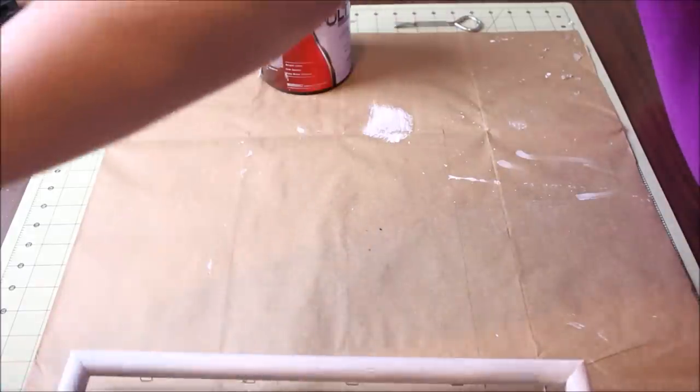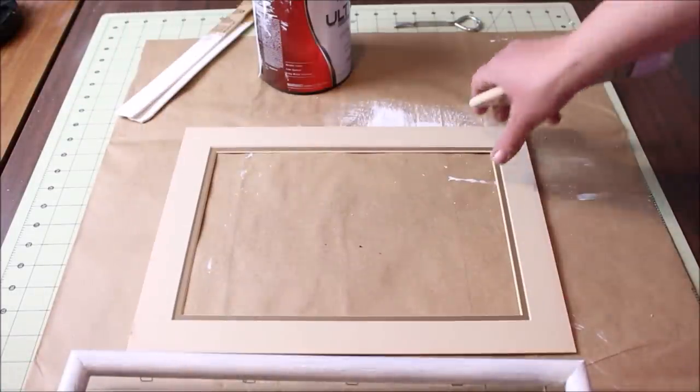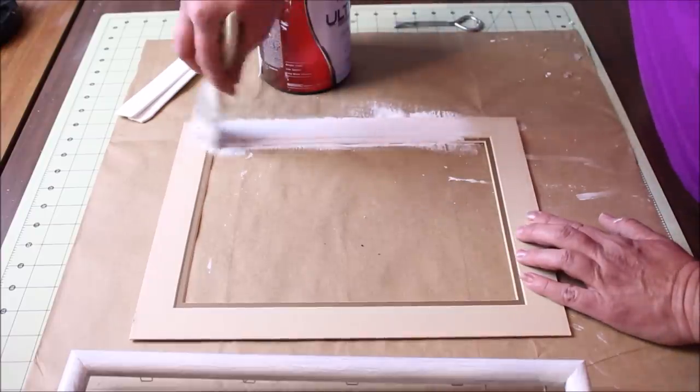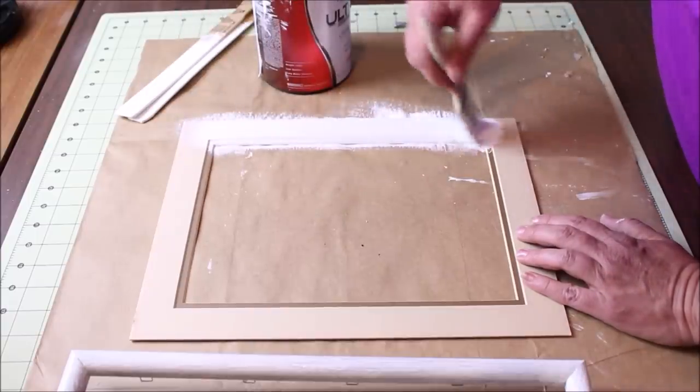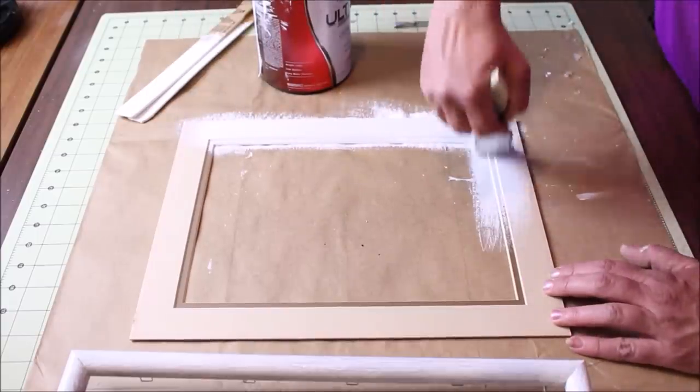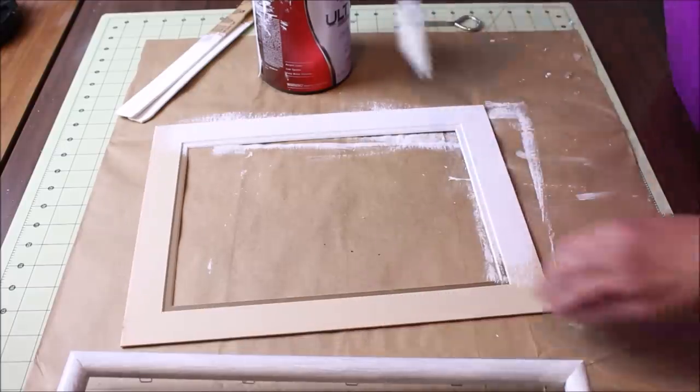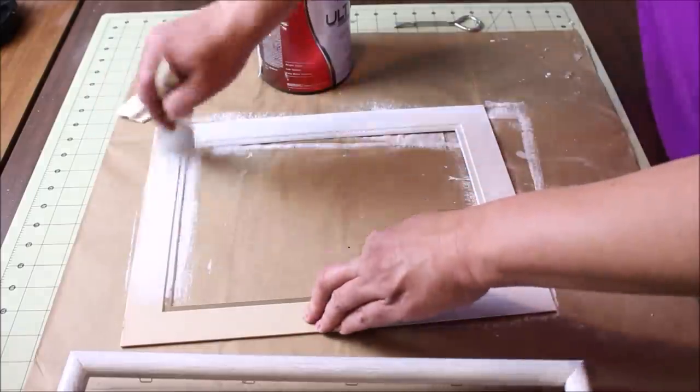Once I was finished painting the frame, I grabbed the photo mat itself and gave that a coat of paint as well. Have you ever done this? It is such a quick and cheap way to reuse a perfectly good photo mat that doesn't quite fit your decor.